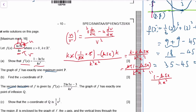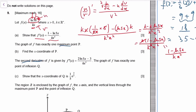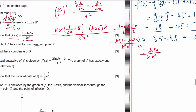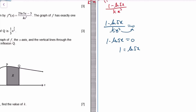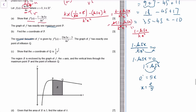To find the maximum, set the first derivative equal to zero. Setting 1 − ln(5x) = 0 gives ln(5x) = 1. By the definition of log, e¹ = 5x, so x = e/5. That's the x-coordinate of the maximum point.